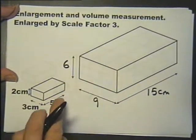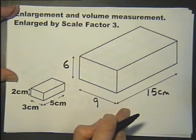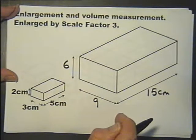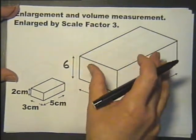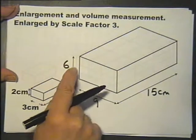Object and image, all the linear measurements are 3 times longer. So we could in fact find the volume of this larger block by multiplying these 3 figures together.